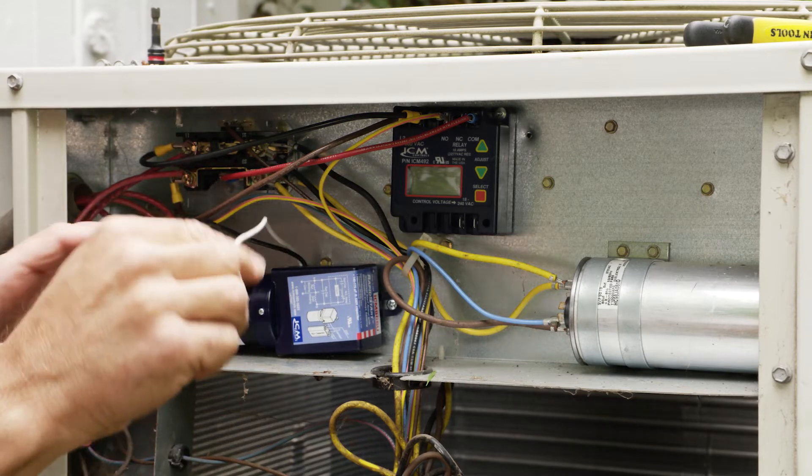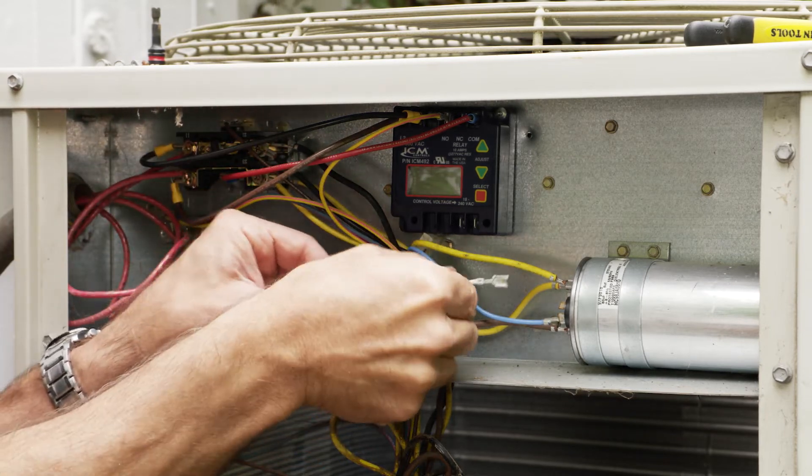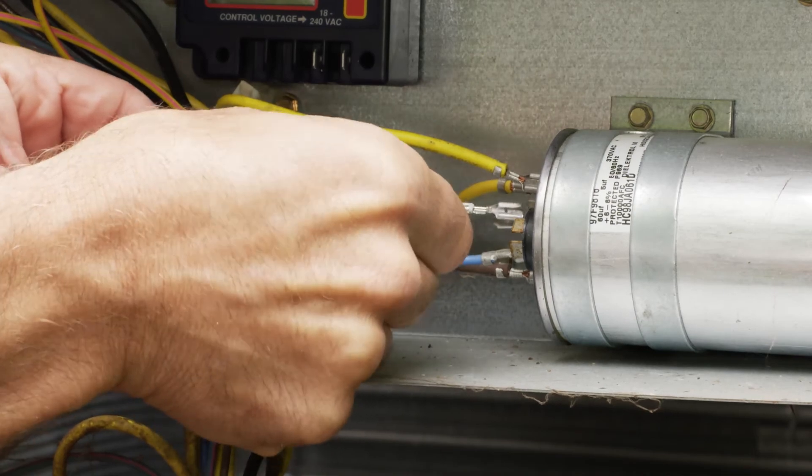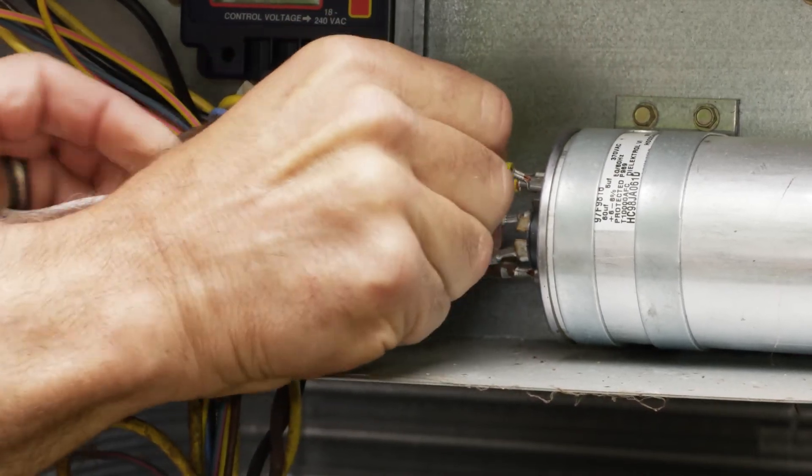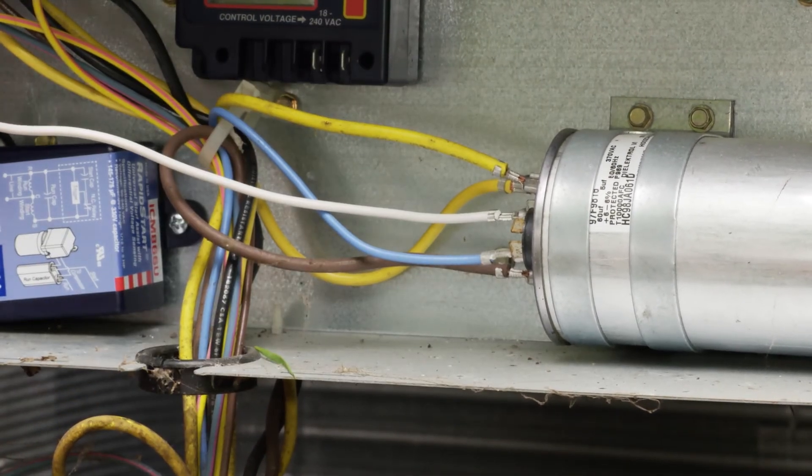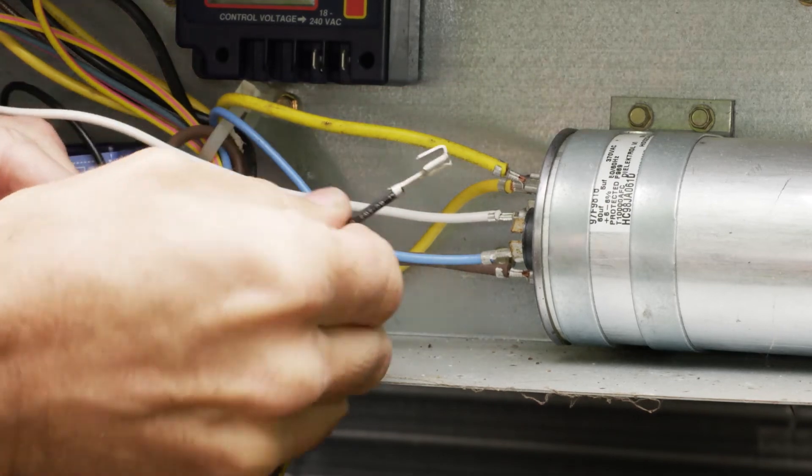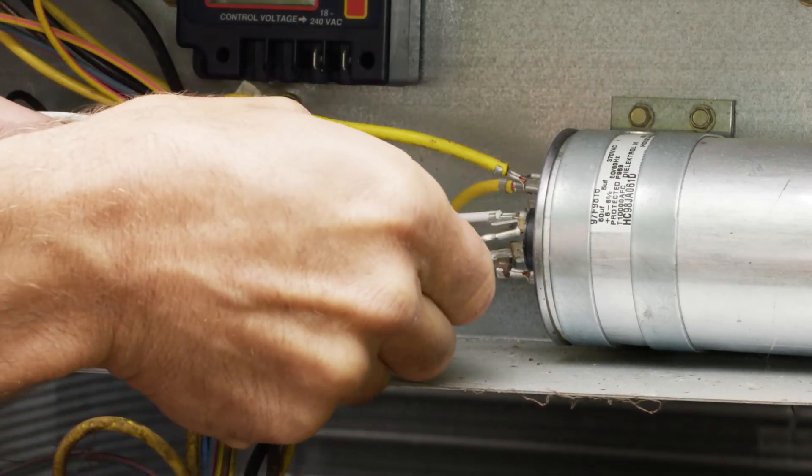Then we're going to take our two wires. Take the white one, going to go to the common terminal. Going to take the black one, go to the compressor terminal or the HERM Hermetic.